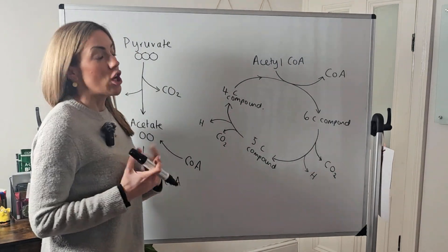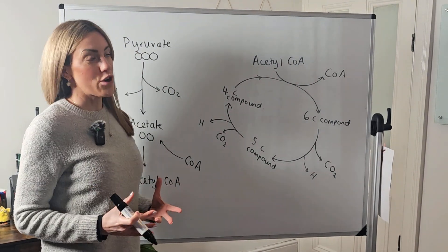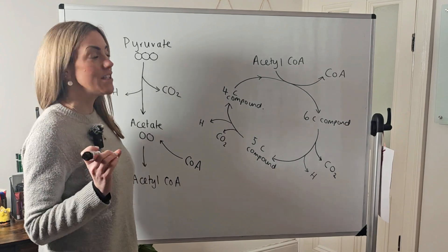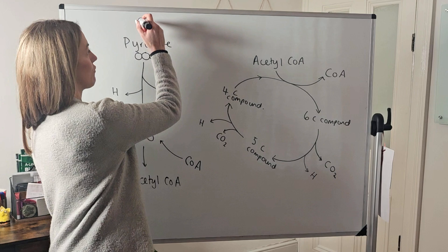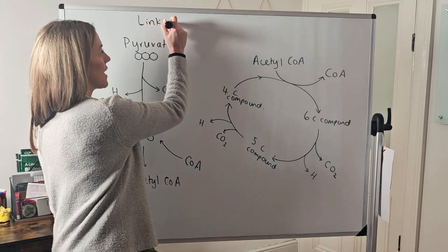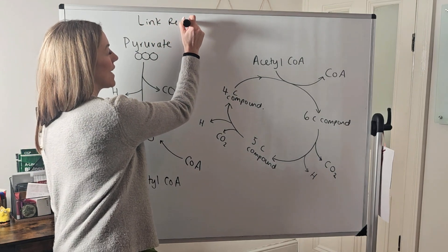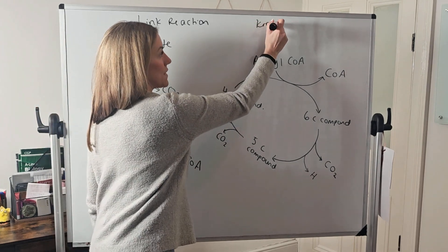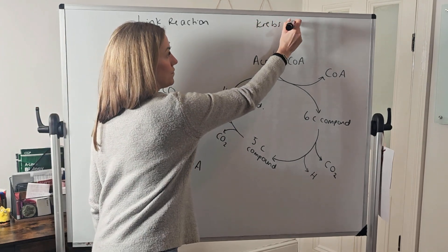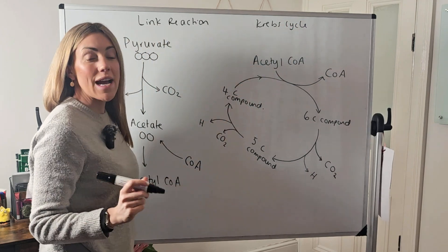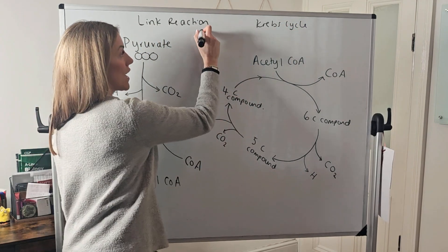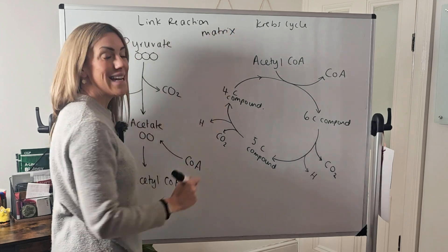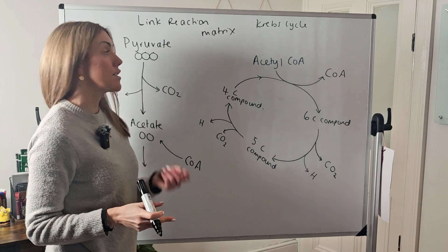In this video we're going to continue with aerobic respiration, looking at the second and third stages. The second stage is the link reaction and the third stage is the Krebs cycle. Both of these reactions take place in the mitochondria, and more specifically in the matrix of the mitochondria.